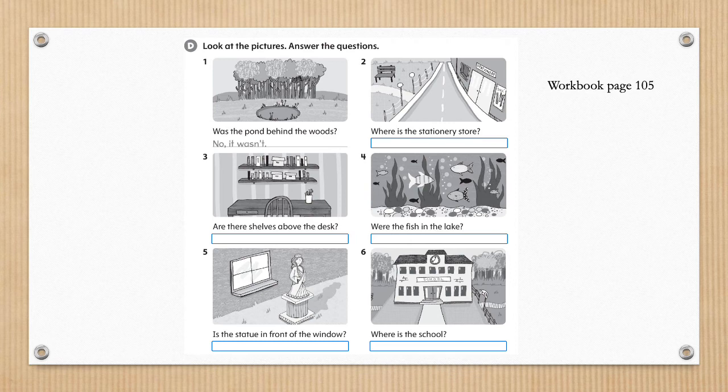Now we will do activity D, which is in your workbook on page 105. We need to look at the pictures and answer the questions. Number 1: was the pond behind the woods? No, it wasn't. The woods were behind the pond. Okay, so we are reading the question, looking at the picture, and writing an answer. Please remember to pause whenever you need extra time. Number 2: where is the stationary stall? Are there shelves above the desk? Were the fish in the lake? Is the statue in front of the window? Where is the school? Students, if you are struggling with this, you may wait until we review to find the answers.